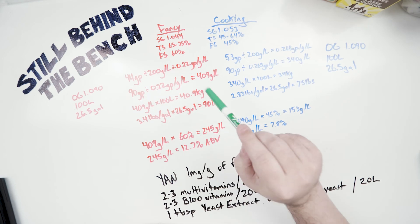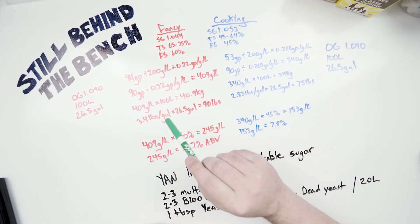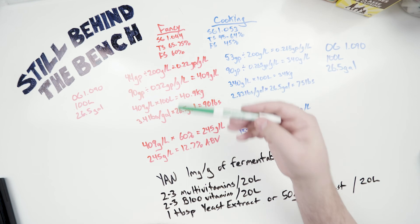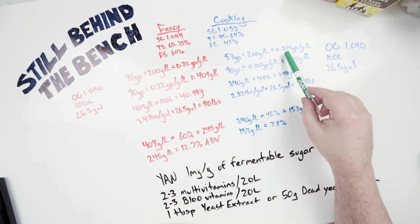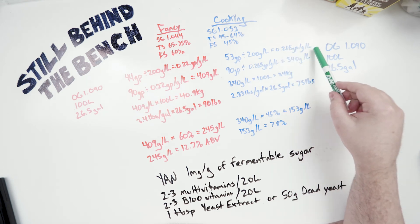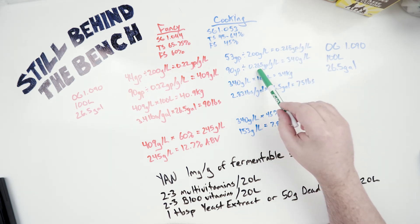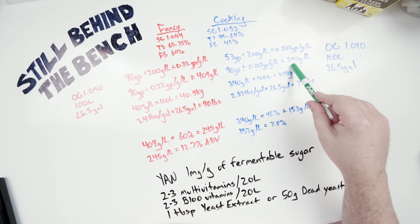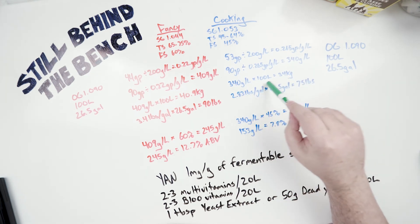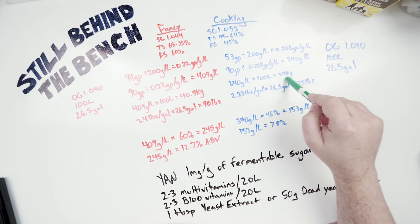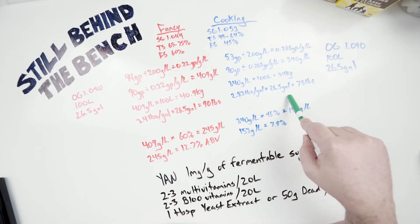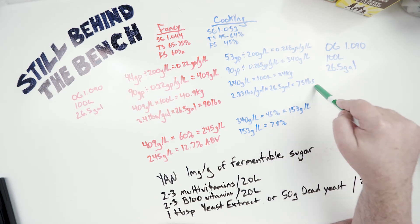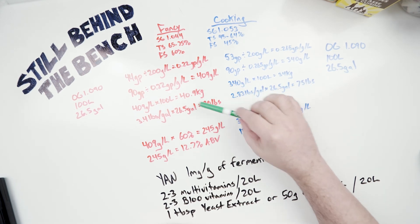So with that 409 grams per liter, I know I'm making 100 liters, so that's 40.9 kilograms. Converting that to American units, that's 3.4 pounds per gallon times 26.5 gallons, that's 90 pounds. That is a crap load of molasses, which is why most people add sugar to boost up the ABV so they can use less molasses. So it was 53 gravity points divided by 200, that gives us 0.265 gravity points per gram per liter. 90 gravity points divided by that value gives us 340 grams per liter. 340 grams per liter for 100 liters is 34 kilograms. Converting to imperial, it's 2.83 pounds per gallon times 26.5 gallons gives us 75 pounds. Again, that's a lot of molasses.